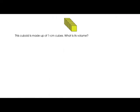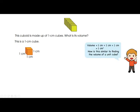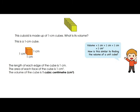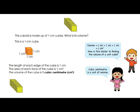Let's say this cuboid is made up of one centimeter cubes. We have a total of four cubes, and volume is one times one times one centimeter — you multiply them. Similarly, to find the volume of this cube, the length of each cube is one, the area of each face is one, and the volume of one cubic centimeter is one. Right now we have four, so its volume is four cm³.